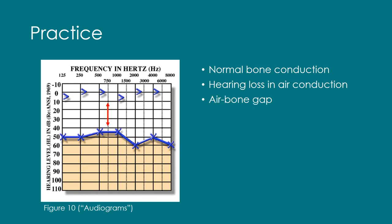A moderate hearing loss is from 41 dBHL to 55 dBHL and a moderately severe hearing loss is from 56 dBHL to 70 dBHL. Since the loss has measurements in both moderate and moderately severe, measuring from 45 dBHL to 60 dBHL, it is categorized as such. Determining the configuration of this audiogram could be tricky. Some people might think it is sloping because the final measurement is below the initial measurement. However, since the final measurement is within 10 dB of the original, it is categorized as a flat configuration.